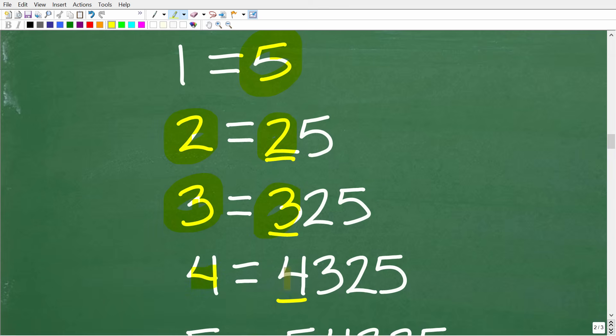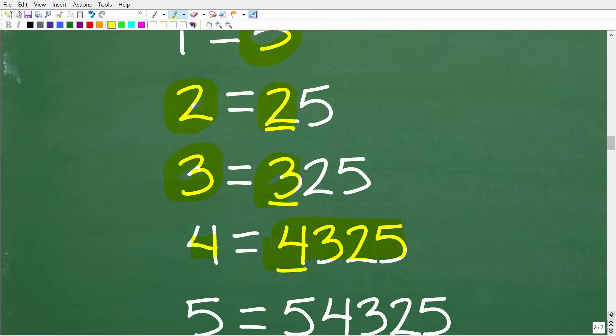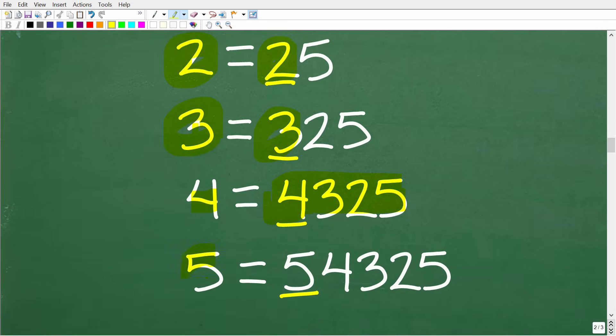So 4 would be what? We're just going to put that 4 in front of the digits of the previous number, which of course is 325. So 4 would be equal to 4, 3, 2, 5. Okay, so if that's the case, then 5 is going to be equal to what? We're going to put 5 in front of the 4, 3, 2, 5.